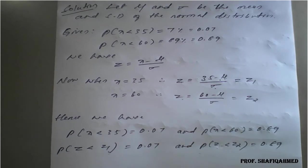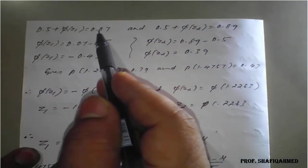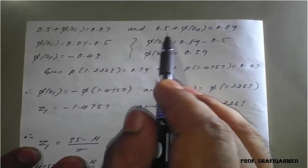So using these two equations, we need to simplify by P of Z less than Z1. How to simplify here? As 0.5 plus phi of Z1 is equal to 0.07. And both are what here? Actually, both results are less than, less than.